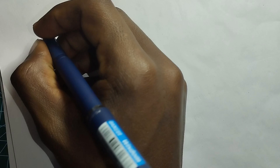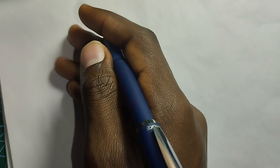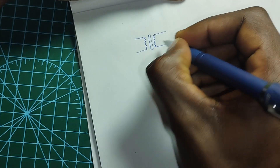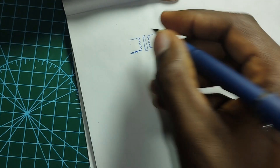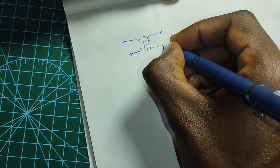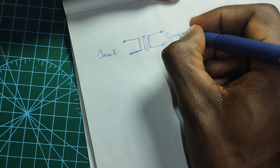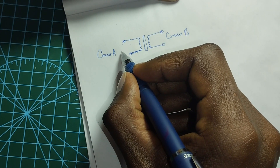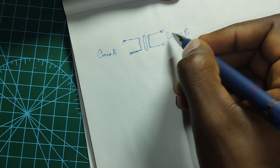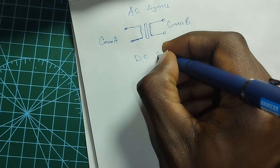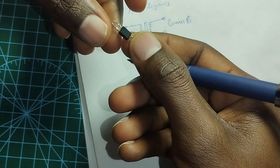By definition, an optocoupler is an electronic component used to transfer electrical signals between two isolated circuits, preventing high voltages or noise from crossing over to the receiving circuit. For AC signals, we can use a transformer with a primary winding and secondary winding, isolated by magnetic induction — circuit A on one side, circuit B on the other. When it comes to DC signals, we use an optocoupler.